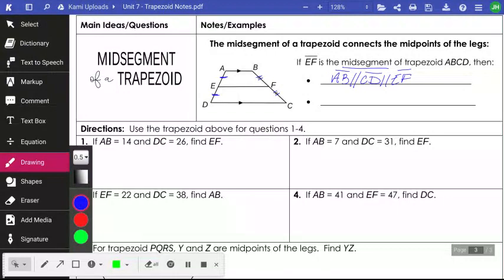So I have to have a segment bar across them. So all three of those, this guy, this guy, and this guy, they're all three parallel to each other. So that has to happen before it be a midsegment.